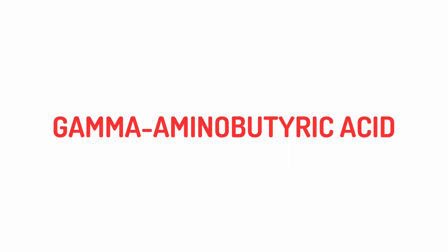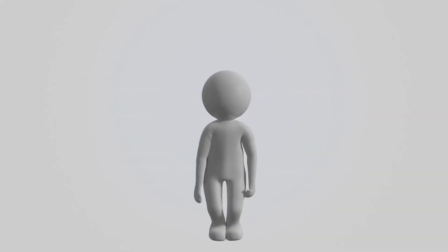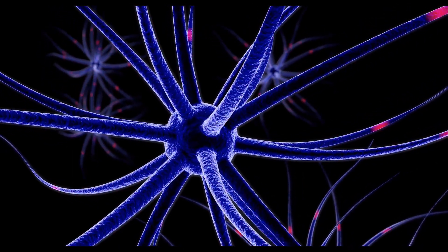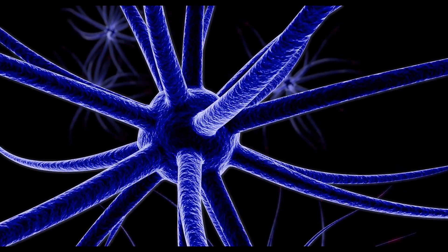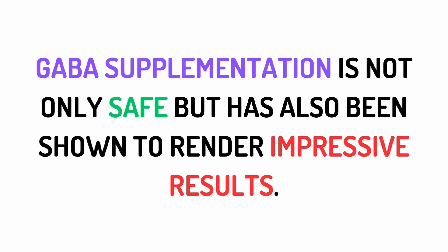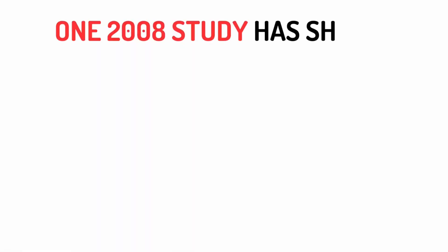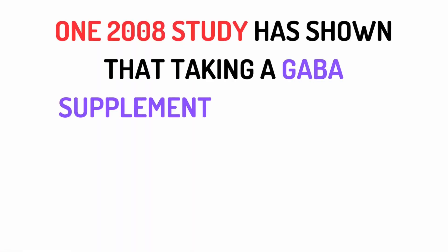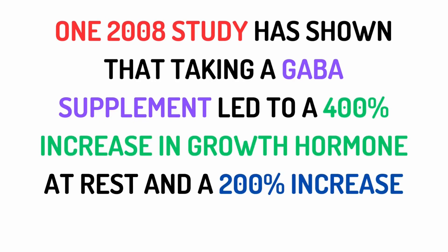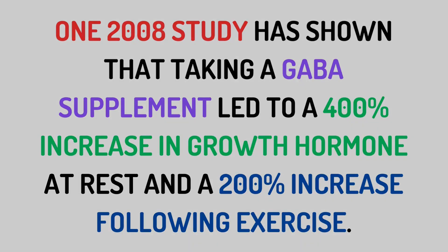Gamma-aminobutyric acid, or GABA for short, is naturally produced in the body and serves the function of a neurotransmitter. GABA supplementation is not only safe, but has also been shown to render impressive results. One 2008 study has shown that taking a GABA supplement led to a 400% increase in growth hormone at rest and a 200% increase following exercise.